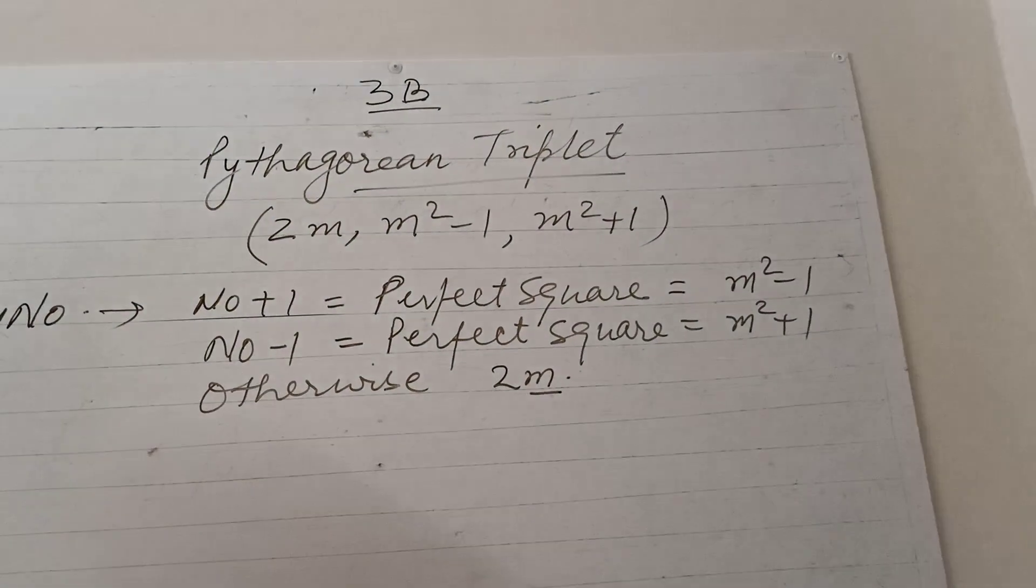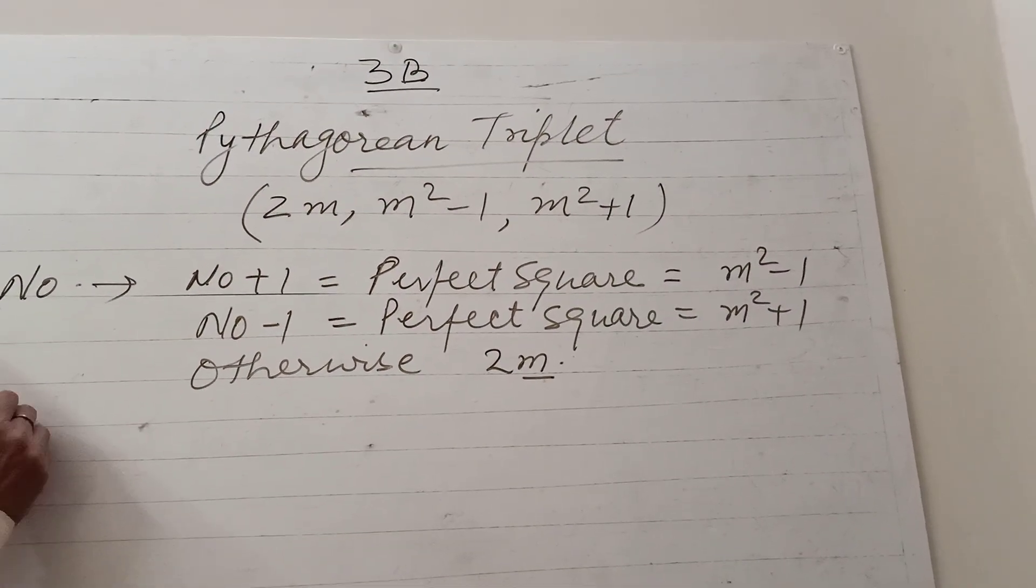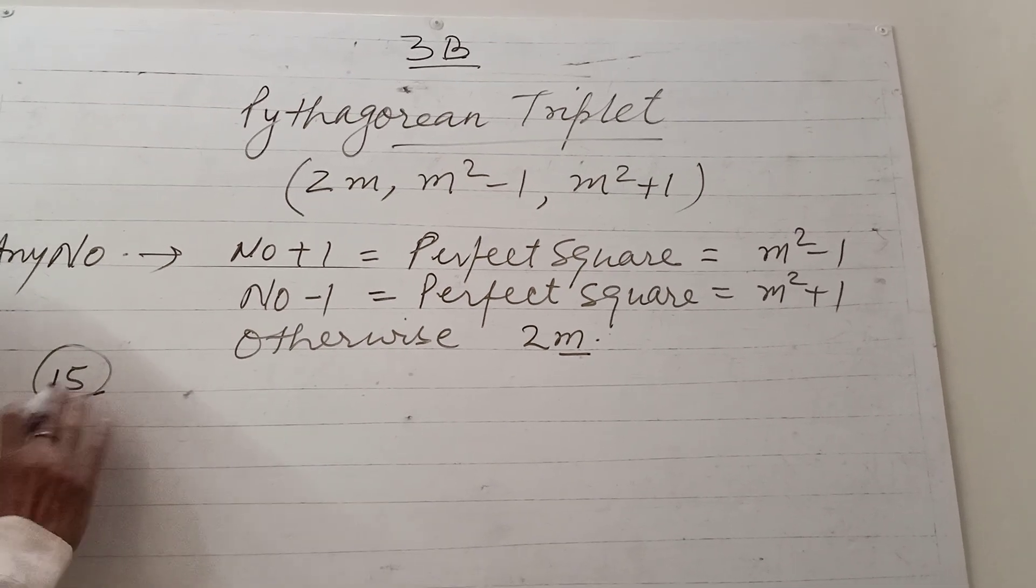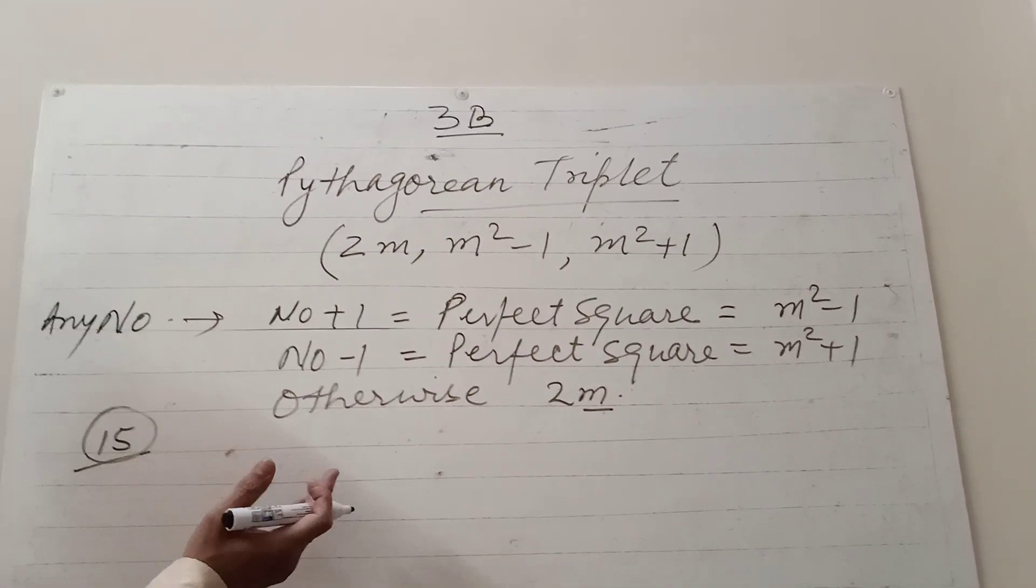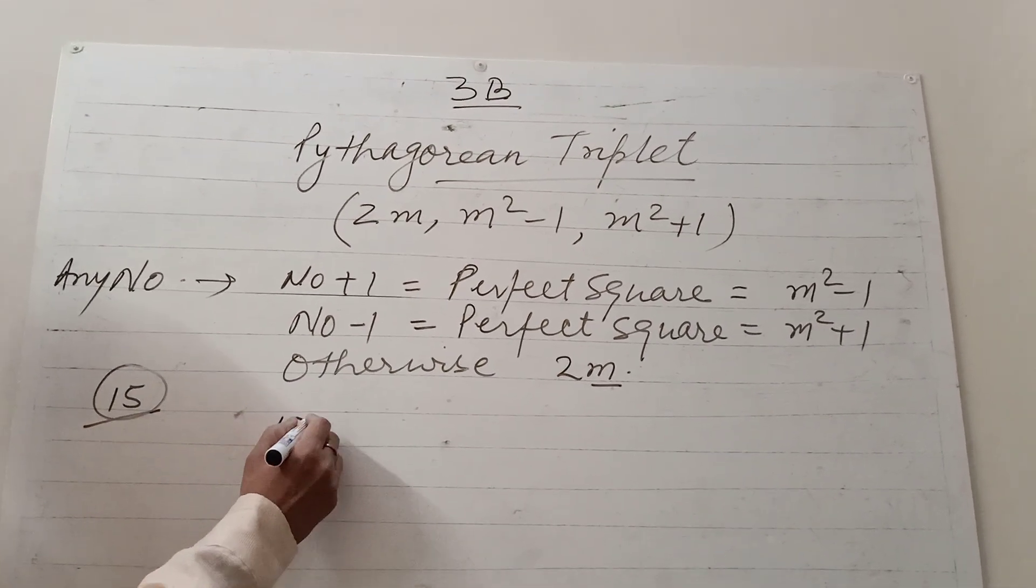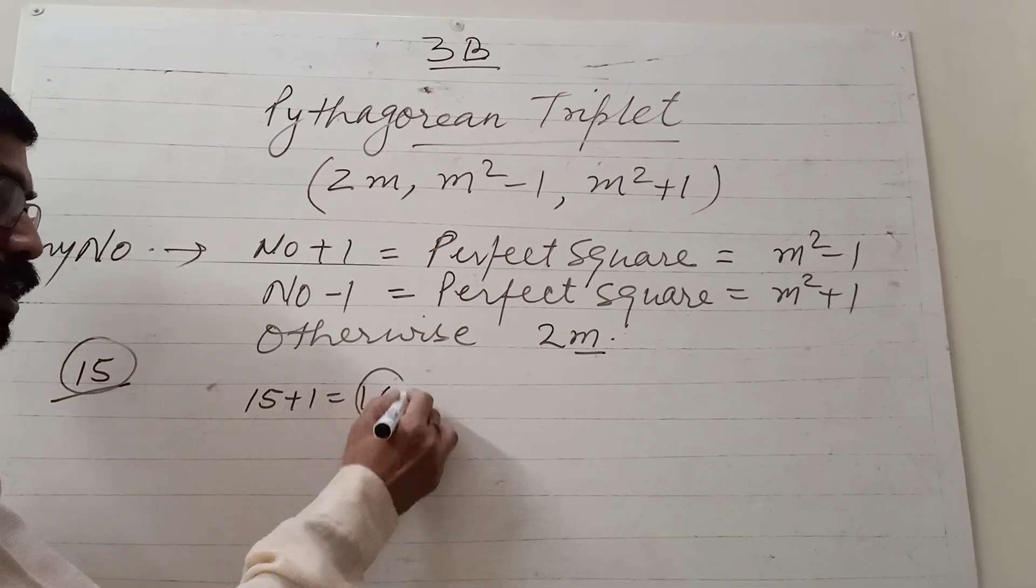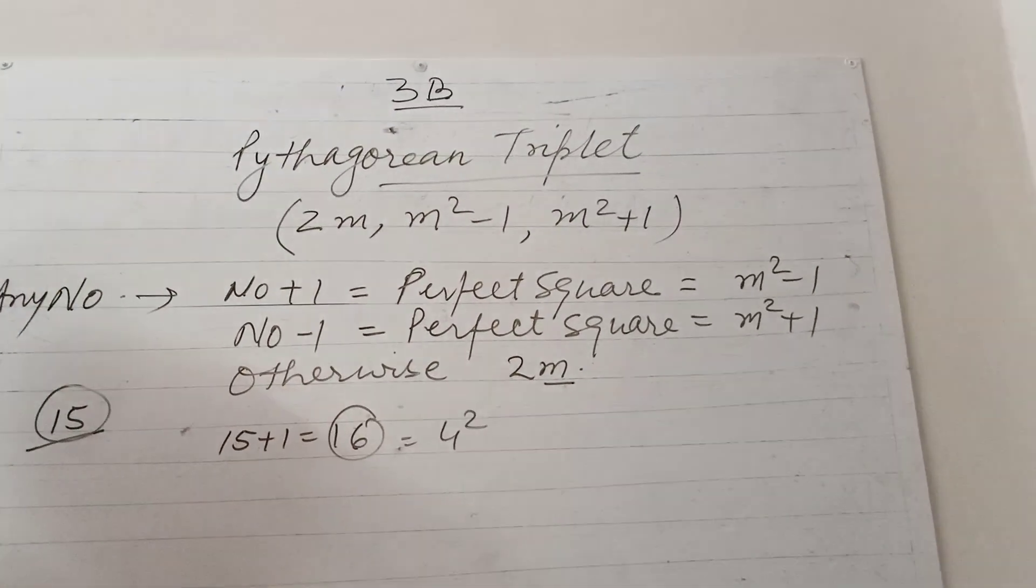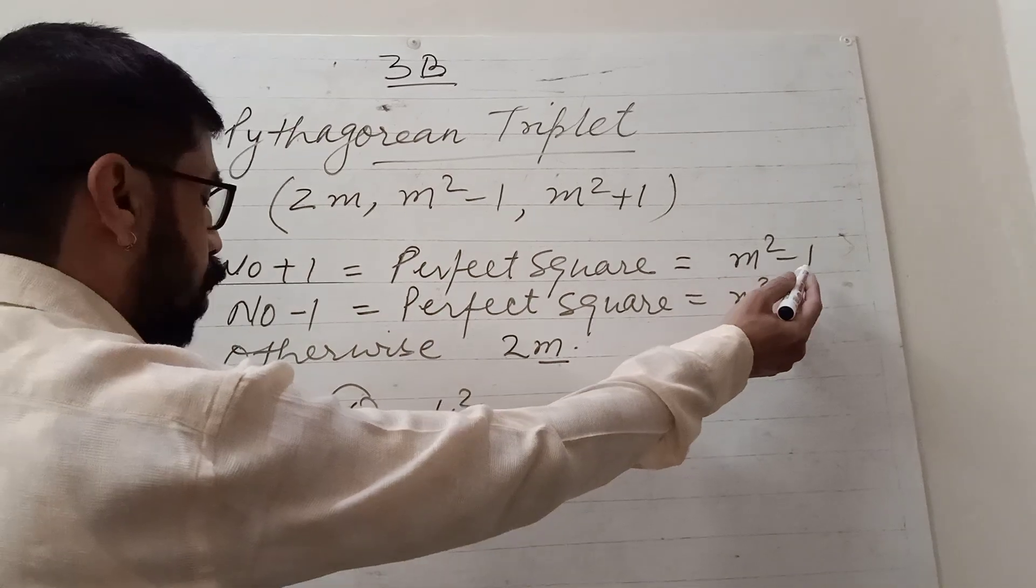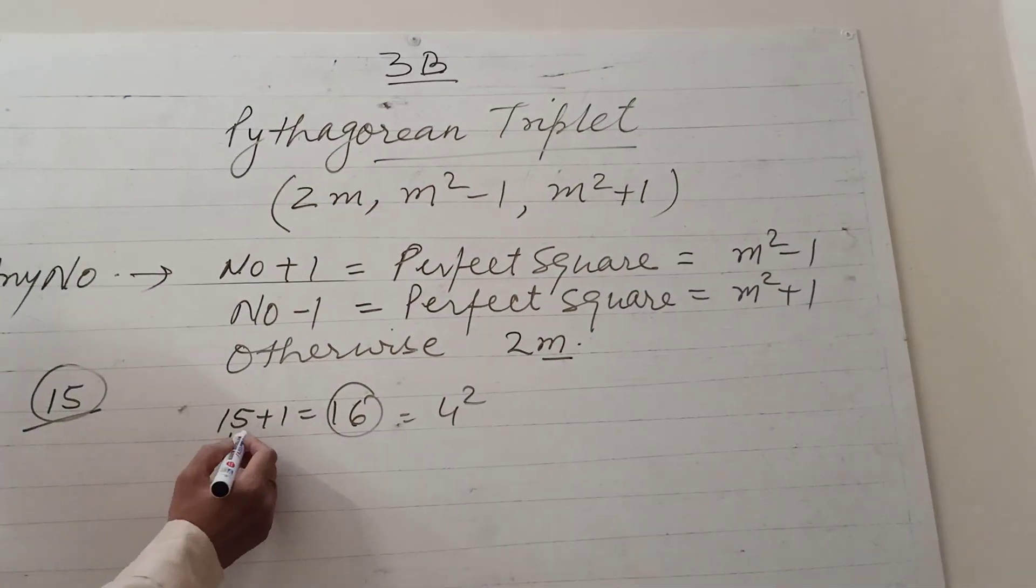Suppose I told you 15. This is the number given: 15. We have to find if either plus 1 or minus 1 is a perfect square. In this case, 15 + 1 = 16, which is the perfect square of 4. So this 15 is the value of m² - 1, because we are adding.